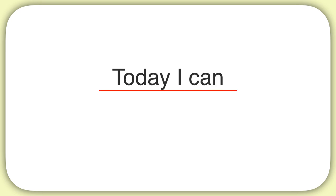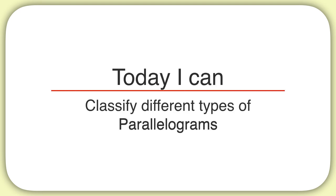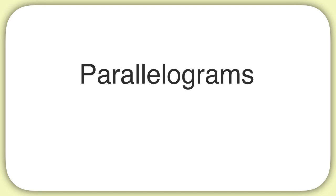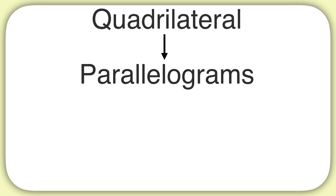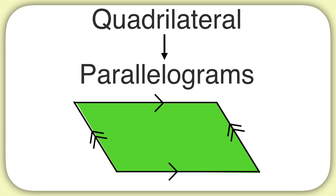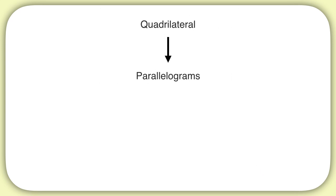Today we are learning how to classify different types of parallelograms. Parallelograms are a type of quadrilateral, and they look like this. They have two sets of sides that are parallel to each other. But there are actually many different types of parallelograms.